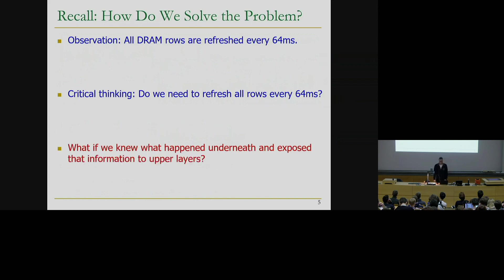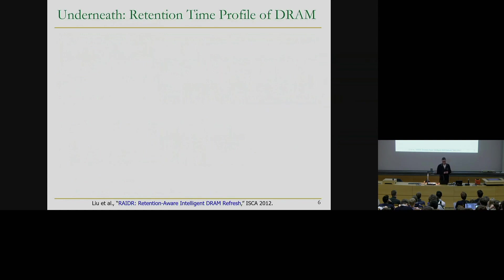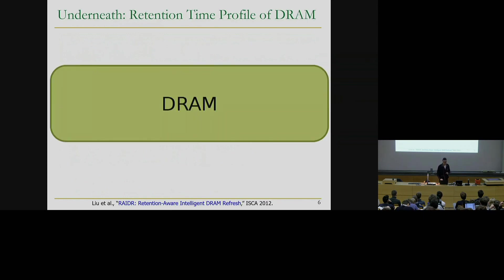So how can we solve this problem, or what can we do about it to eliminate some of its downsides? One question is: what if we knew what happened underneath and that information was exposed to upper layers? Specifically, if you can understand exactly why we need to refresh the DRAM cells and exactly for how long they can retain the data, can we do something with it at the upper levels in the transformation stack? So when we look at DRAM today with the 64-millisecond refresh - periodically refreshing every single cell - DRAM looks uniform.